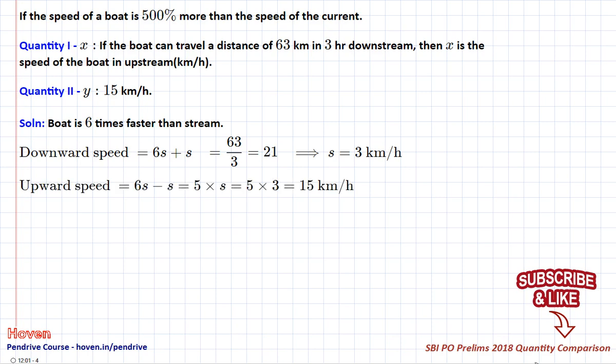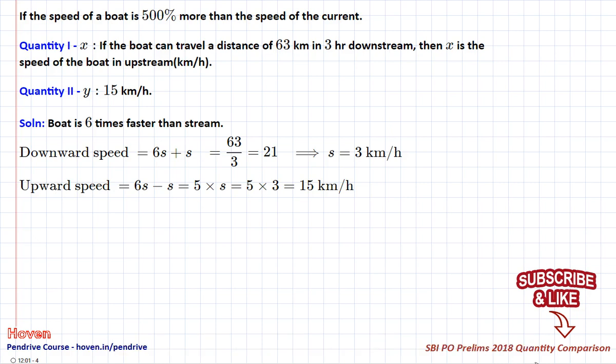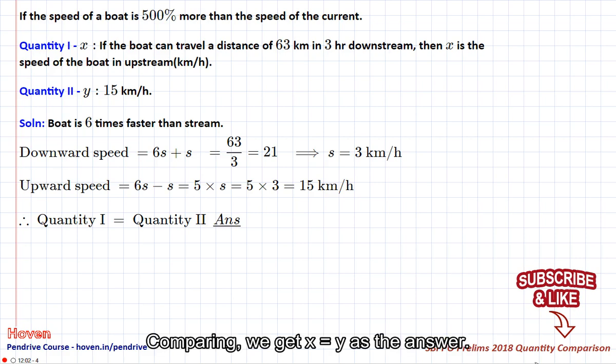The upstream speed is the difference of the two speeds, which is 5 times the speed of the stream. Solving, we get upstream speed as x equal 15. Comparing, we get x equal y as the answer.